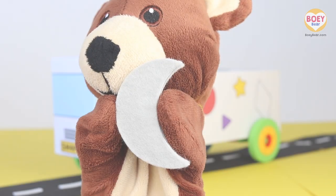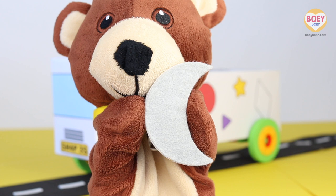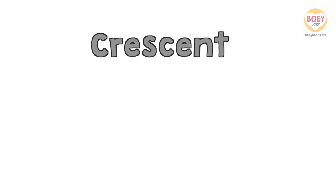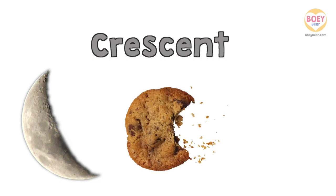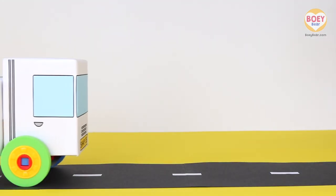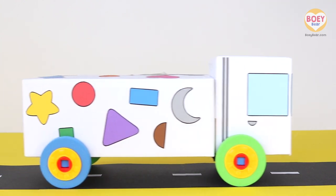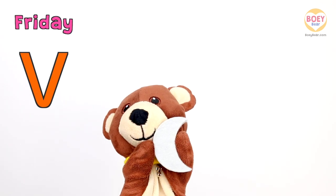Well done! It has two curves — one, two — and two points at each end — one, two. What things around us are crescent shaped? A crescent shaped moon, a crescent shaped cookie, and a crescent shaped banana! So today's shape is a crescent.